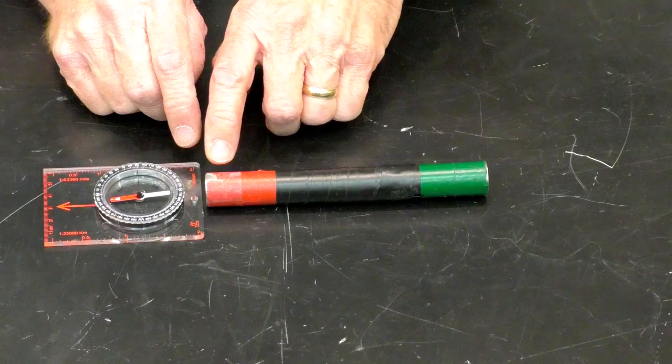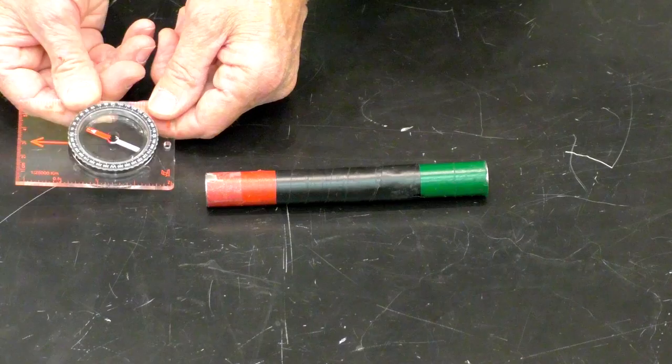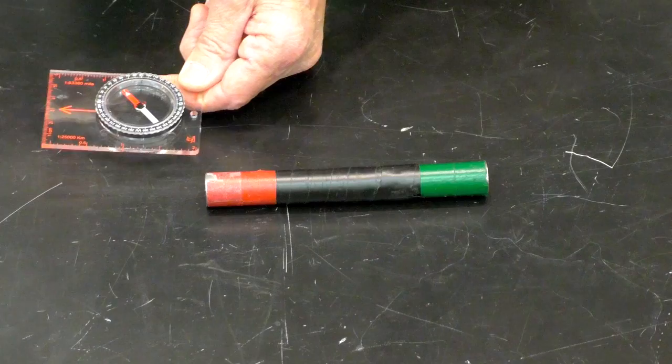So if we then want to investigate how the magnetic field direction changes as we move in the vicinity of this bar magnet. Now we've moved here and we can see that the magnetic field lines are starting to curve.